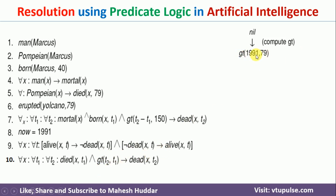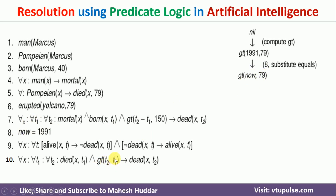I will take t2 = 1991, because 1991 is 'now' — the current year — and t1 = 79. Definitely 1991 is greater than 79, so this is a valid statement. So gt(1991, 79) can be written as gt(now, 79), because 1991 is nothing but 'now.' The only thing we still need to prove is died(marcus, 79), i.e., marcus died at time t1 = 79.